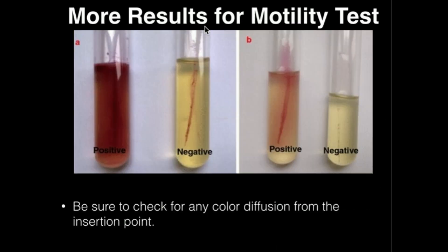Here are some more details on the results for the motility test. Over here we have a positive result — we have red everywhere and can clearly see it has diffused away from the stab made by the inoculating needle. In this negative result, we clearly see there's no diffusion of the bacteria or redness away from that stab wound; the TTC redness is confined to that stab, so this would be a negative result.